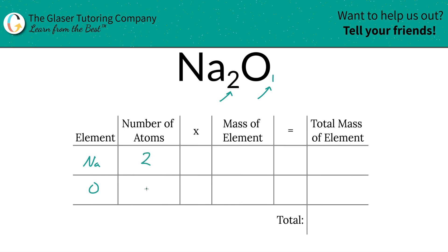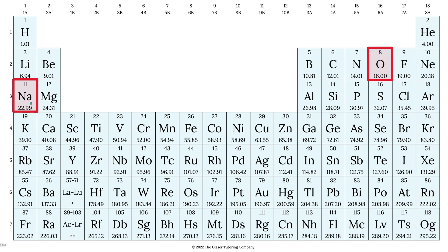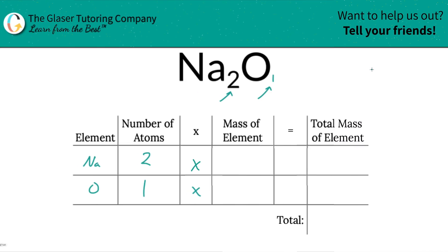Then we're going to take those number of atoms and multiply by the mass of each particular element. Those masses are found on the periodic table so you got to take a look: 22.99 for sodium, 16 for oxygen, and that's what we're going to write down. So 22.99 for sodium, oxygen is going to be 16.